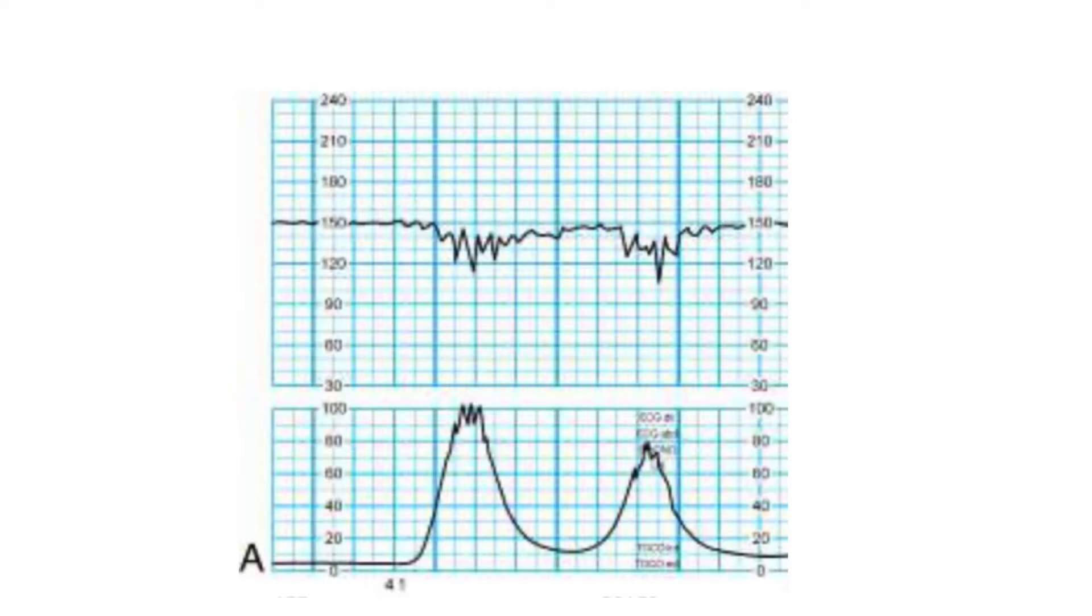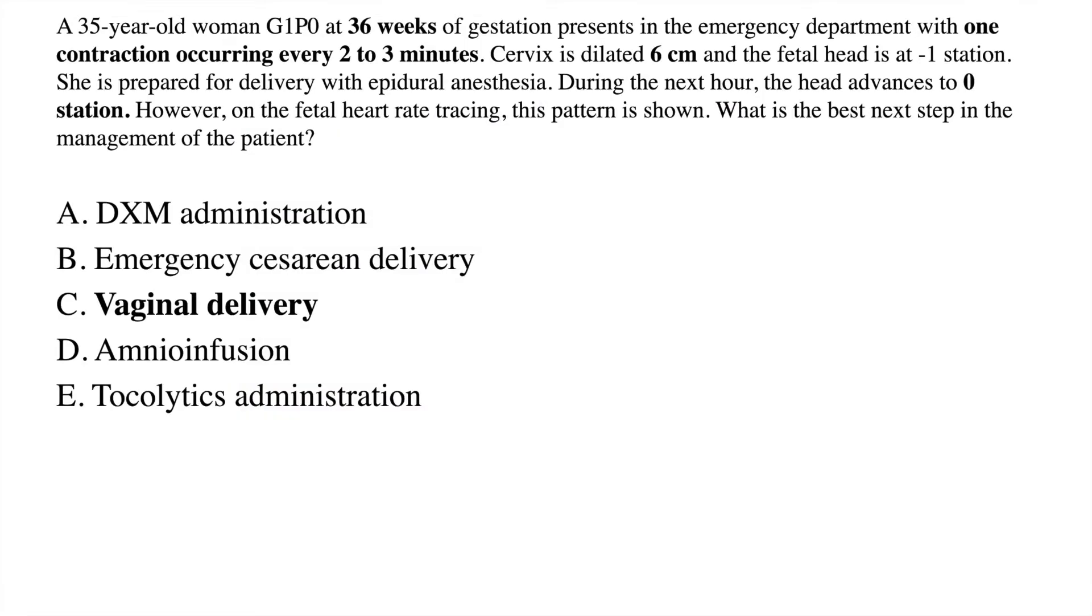However, on the fetal heart rate tracing this pattern is shown. As you can see, there is a deceleration that occurs during the uterine contraction and finishes almost concomitantly. This means that we encounter an early deceleration.